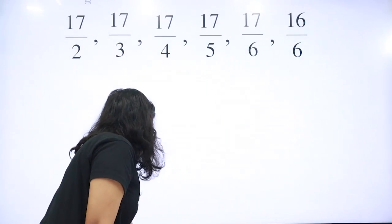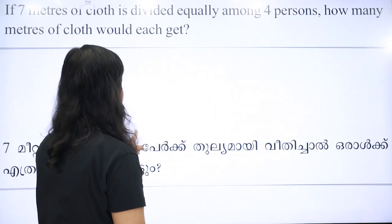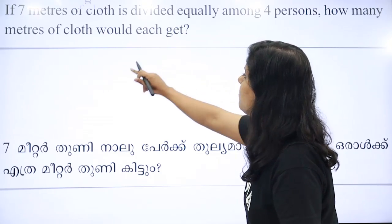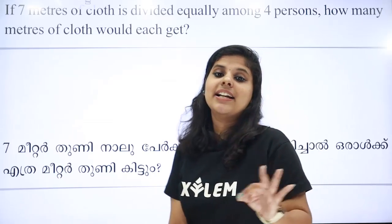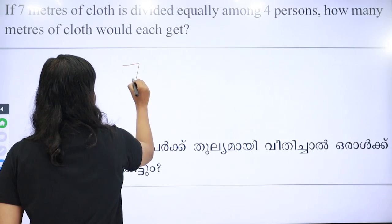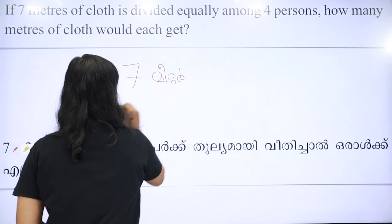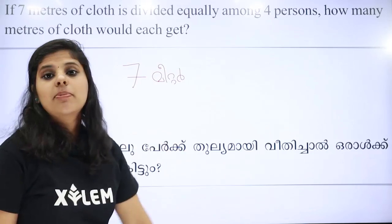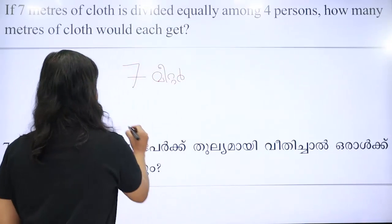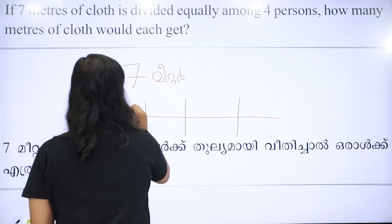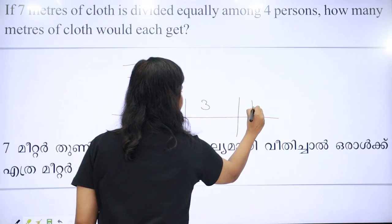And the last question — please do homework for the rest of your questions. If 7 meters of cloth is divided equally among 4 persons, how many meters of cloth would each get? That is 7 meters of cloth. You divide it into 4 parts: one, two, three, four.